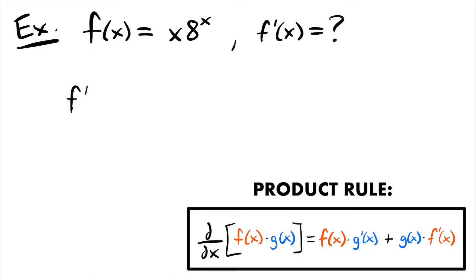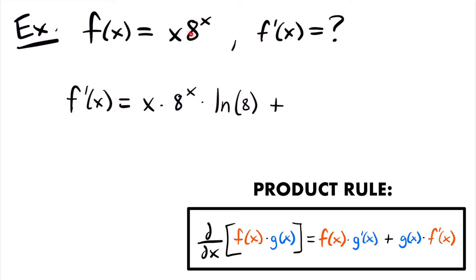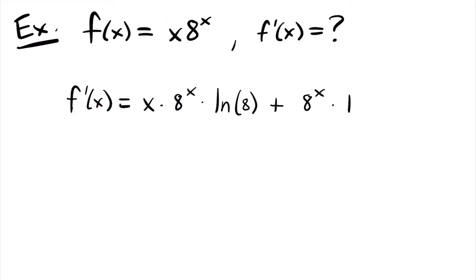Using the product rule, f prime of x is equal to that first function x times the derivative of the second function. The derivative of 8 to the power of x will be 8 to the power of x times the natural log of the base 8 — we just rewrite the exponential function and multiply by the natural log of the base. Then we add our second function 8 to the power of x times the derivative of the first function x, which is just 1 since x is to the first power. We can rewrite this as x times 8 to the power of x times the natural log of 8, plus 8 to the power of x.